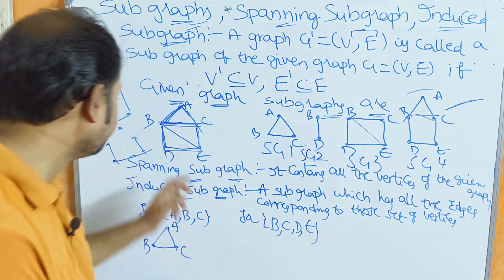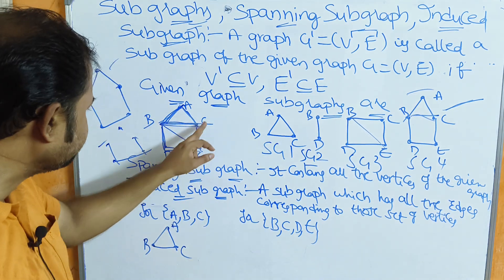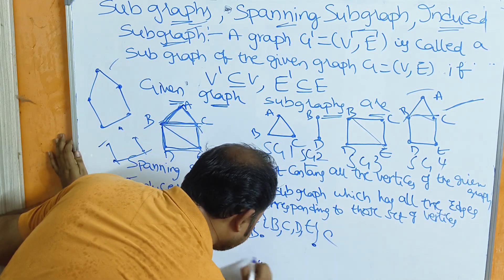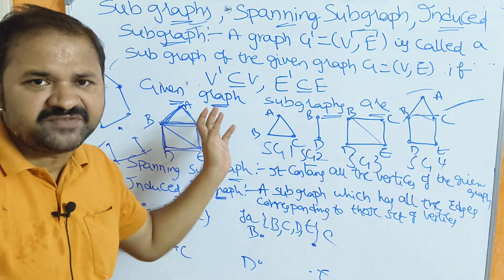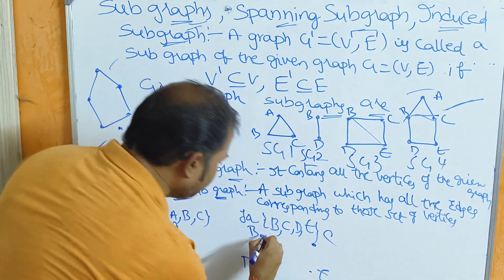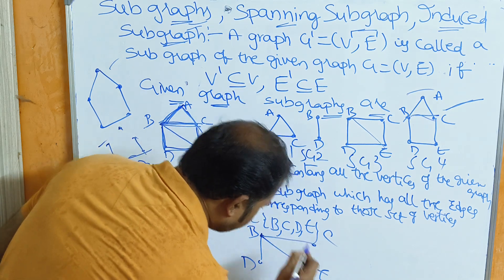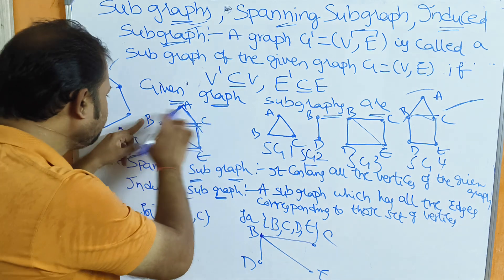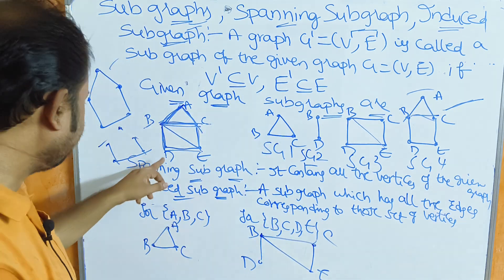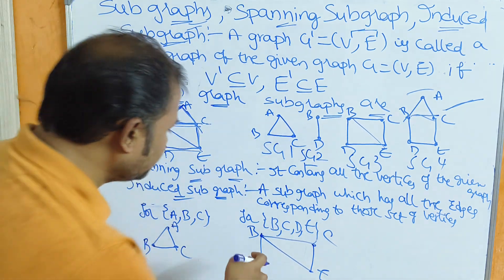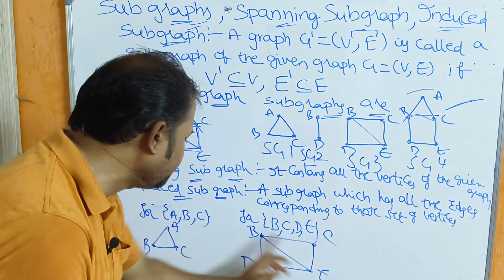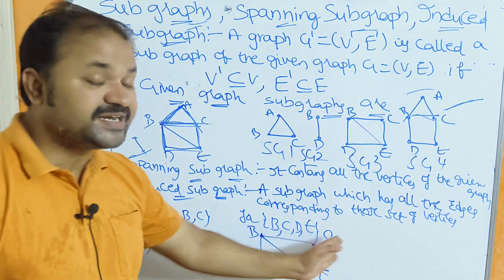Now let us construct the induced subgraph for vertices {b, c, d, e}. According to the given graph, for these vertices: from b to c we have an edge, from b to d we have an edge, from b to e we have an edge, from c to e we have an edge, and from d to e we have an edge. This is the induced subgraph for vertices b, c, d, e.